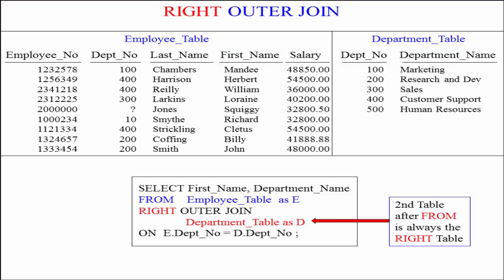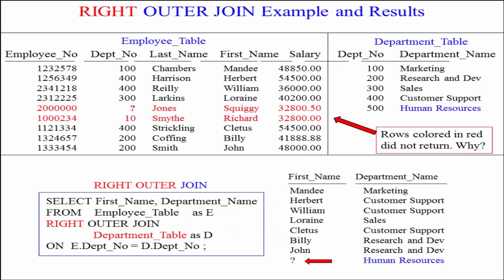The first table mentioned after the FROM clause is the employee table, which is the left table. We're doing a right outer join, and the second table mentioned is the department table. That's going to be the outer table. So once again, we're going to join where E.DepNo equals D.DepNo, and all the matches are going to come back.